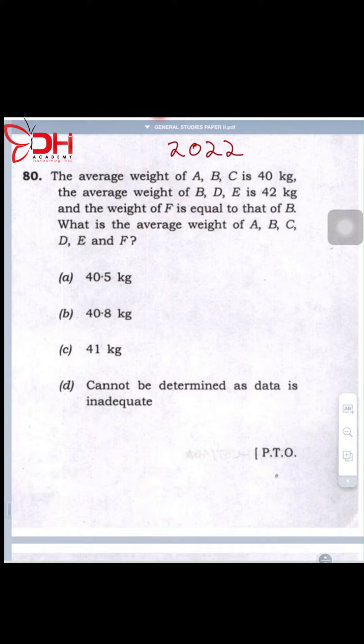This is very simple. If you say A, B, C, its average weight is 40. So A, B, C is 3. So 40 into 3 is going to give you 120. And B, D, E is 42. So 42 into 3 again is going to give you 126.